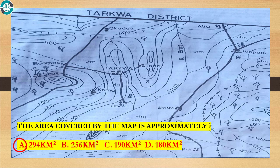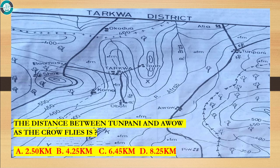Question 10: The distance between Tompani and Awao as the crow flies is A. 2.50 km, B. 4.25 km, C. 6.45 km, D. 8.25 km. The answer to this question is D, 8.25 km. That is how we wrap up for the practical aspects of the objective test. Goodbye.